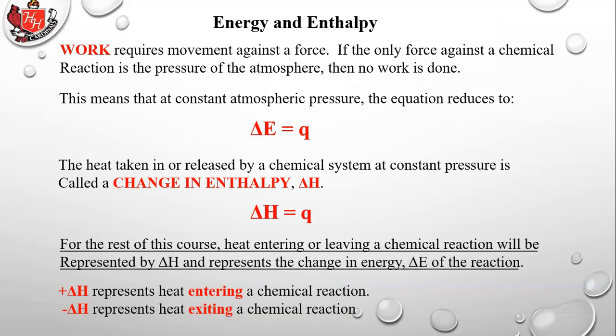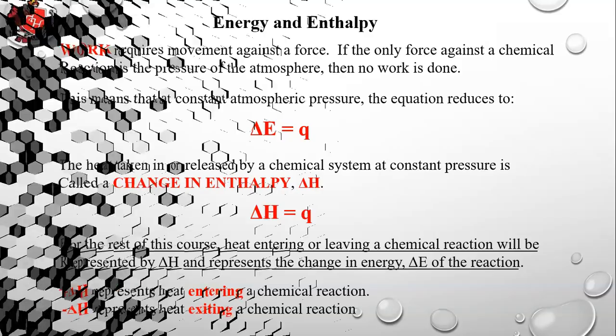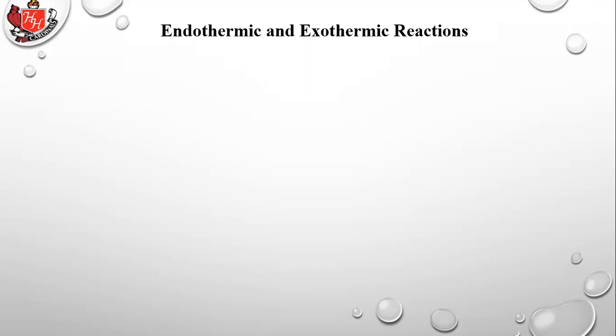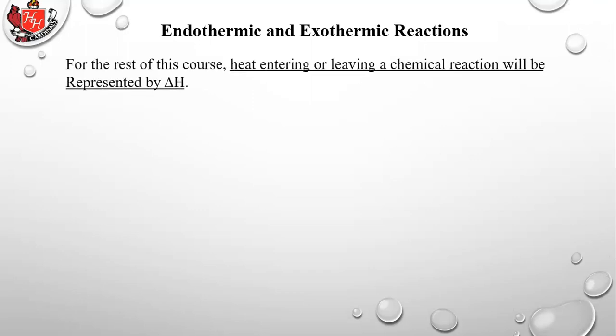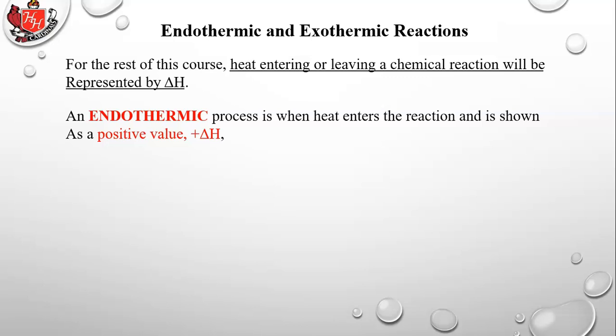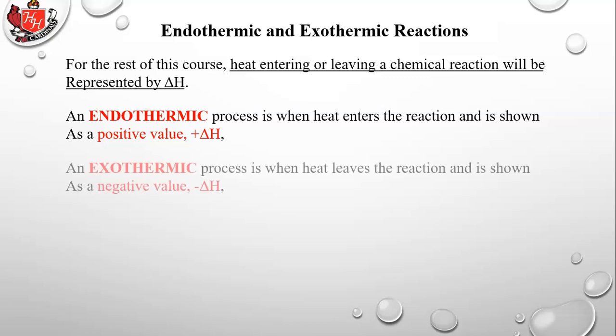A positive delta H represents heat entering a chemical reaction; a negative delta H represents heat exiting. An endothermic process is when heat enters the reaction — positive delta H. An exothermic process is when heat leaves the reaction — negative delta H. Remember: endothermic sounds like the heat is going in; exothermic sounds like an exit sign, meaning heat goes out, giving a negative delta H.